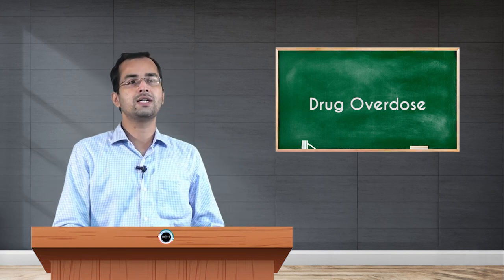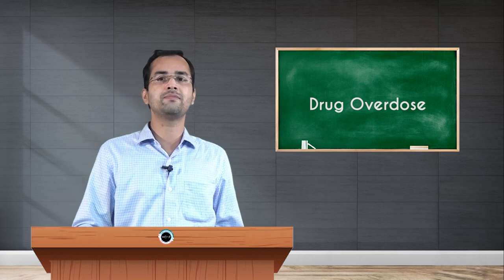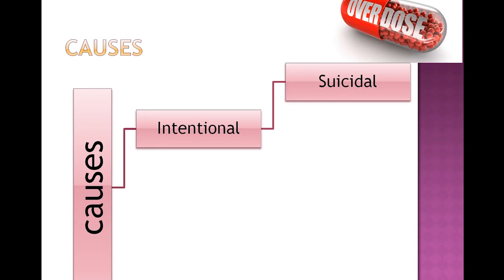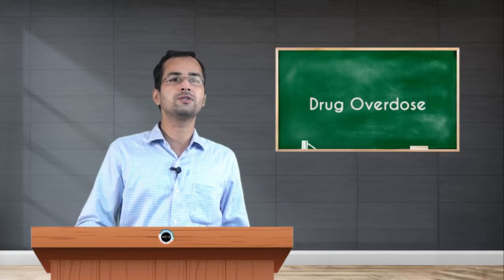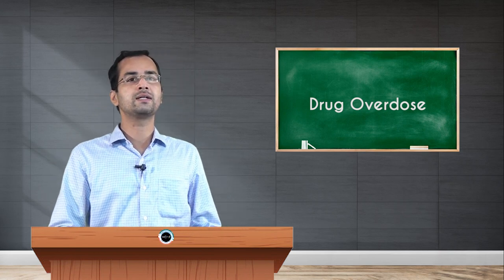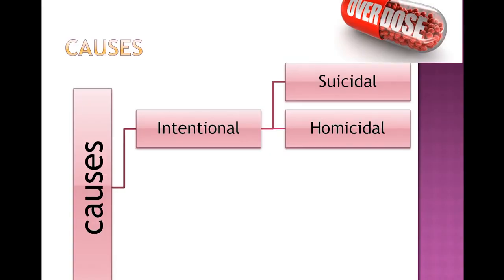What are the causes of drug overdose? First, it can be taken intentionally due to suicidal tendencies. For example, a patient prescribed antidepressants or sleep-inducing medicines may take extra doses intentionally. Another cause is homicidal, where another person intentionally wants to harm someone by administering extra doses of medicine.